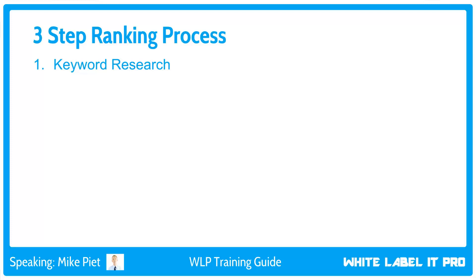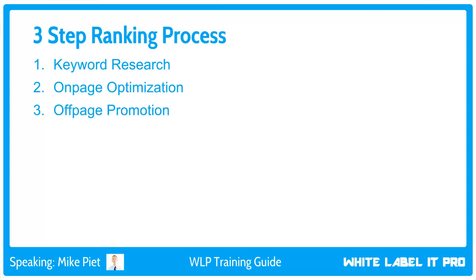Step one only has one step versus the other steps which have multiple sub-steps. The first step is keyword research, the second step is on-page optimization, and the third step is off-page promotion. We'll go over exactly what those mean and how they work, starting with keyword research.